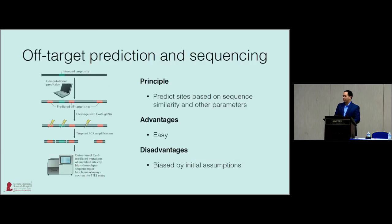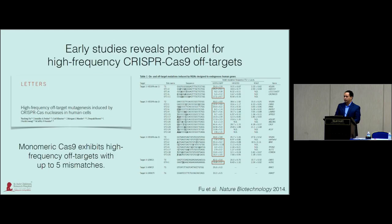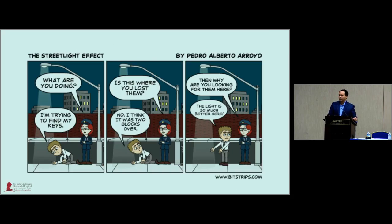Some of the first efforts for finding off-targets involved computational prediction — predicting sites similar to the intended target based on sequence similarity and other parameters. In some early studies conducted in Keith's lab and others, we found potential for high-frequency CRISPR-Cas9 off-targets. We looked at a number of different nucleases and found high-frequency off-targets in various cell lines — sometimes with frequencies higher than the on-target site, with up to five mismatches.